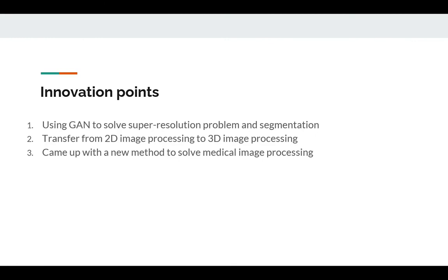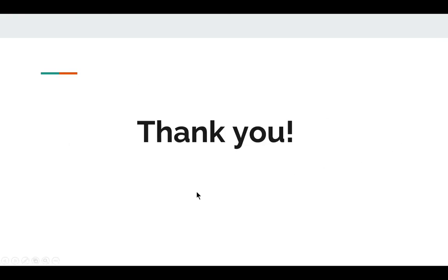You can see it's quite different — it has higher resolution than the right hand images. The innovation points of our project are: first, we use a GAN to solve the super resolution problem and segmentation, which is a new approach. Second, we transfer from 2D image processing to 3D image processing, because CyclicGen only handles 2D problems, but we extended it to solve 3D image processing. Last, we came up with a new method to solve medical image processing. That's all of our work. Thank you very much.